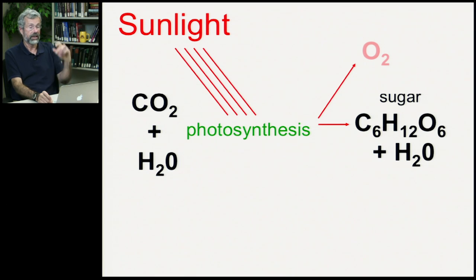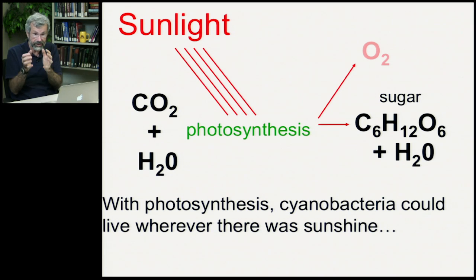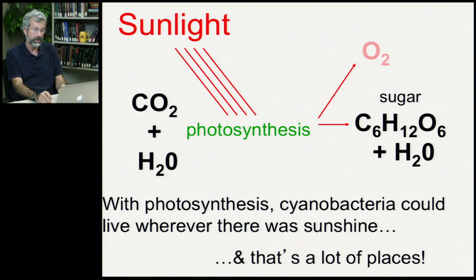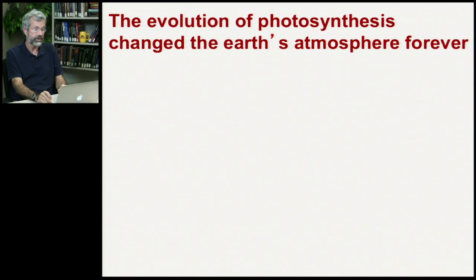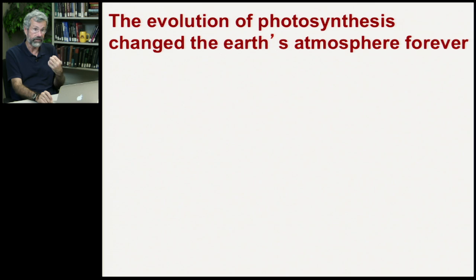The oxygen given off could get into the atmosphere. With photosynthesis, cyanobacteria could live wherever there was sunshine, so they could live throughout the whole ocean and didn't have to stay stuck next to those thermal vents. That's a lot of places, so they would have been enormously common all over the earth's surface. And with photosynthesis, they're now producing oxygen all the time, and that changed the earth's atmosphere forever.